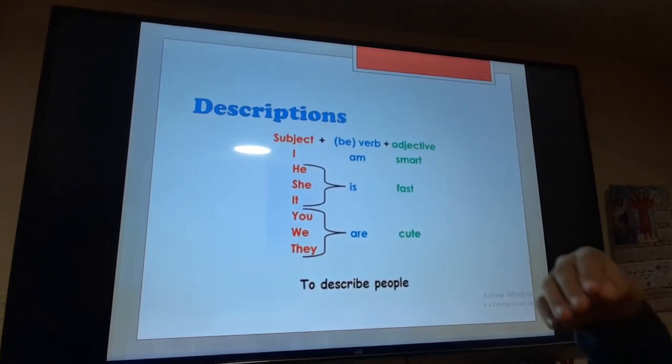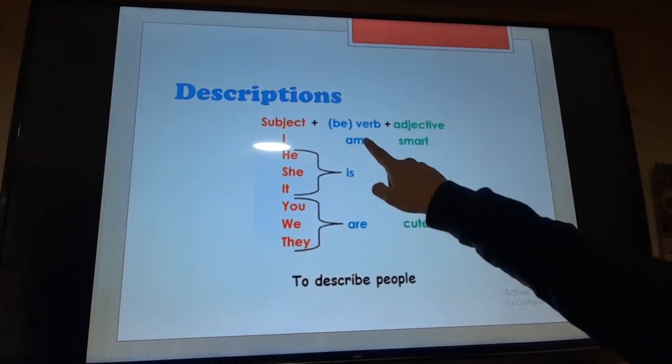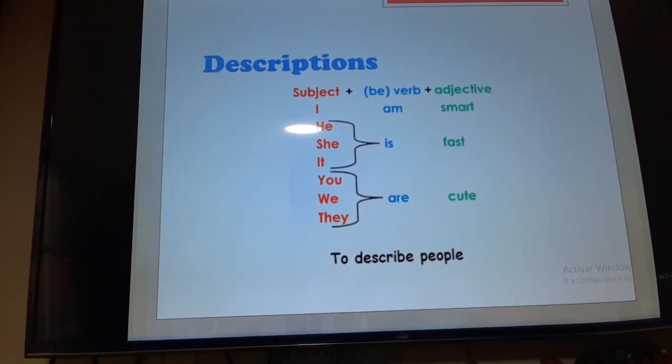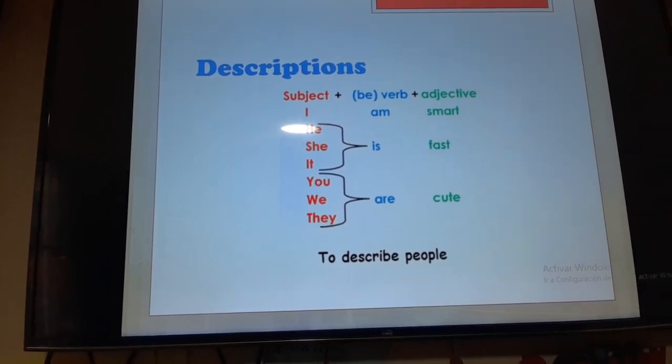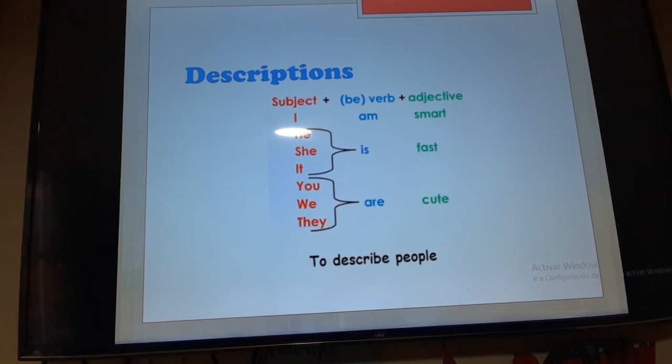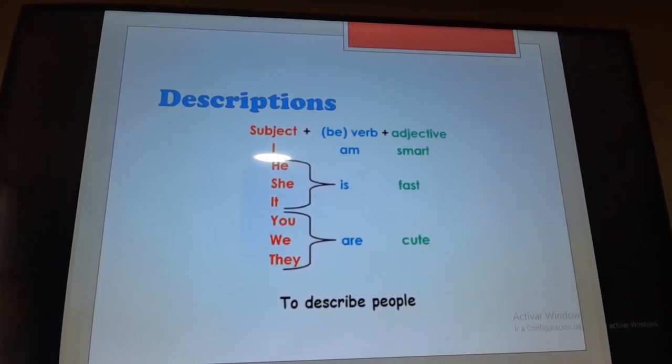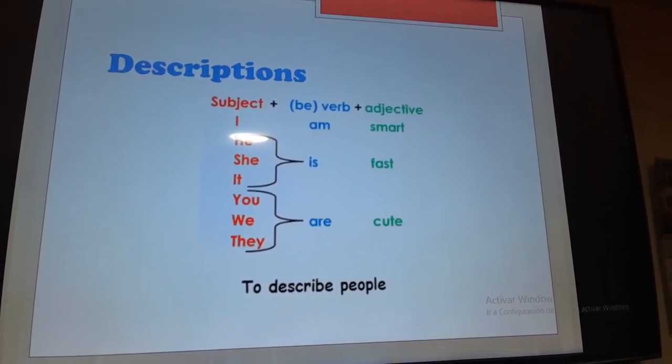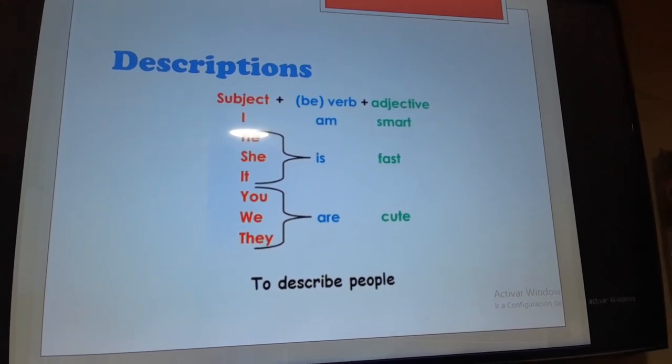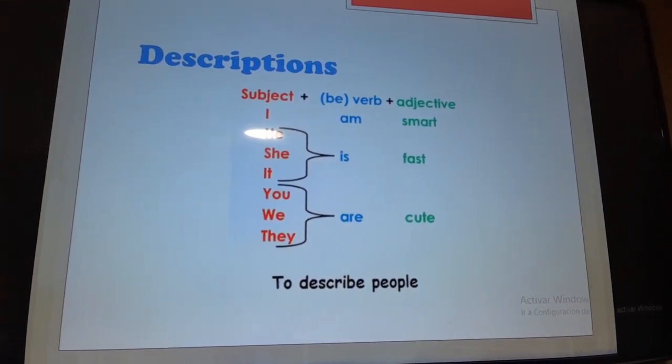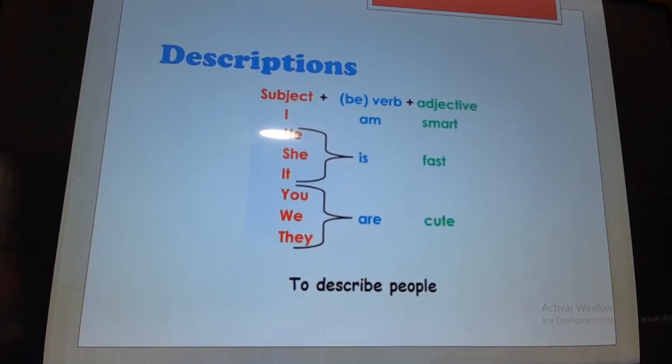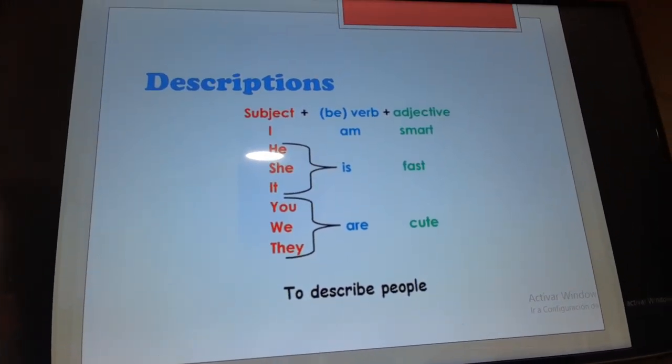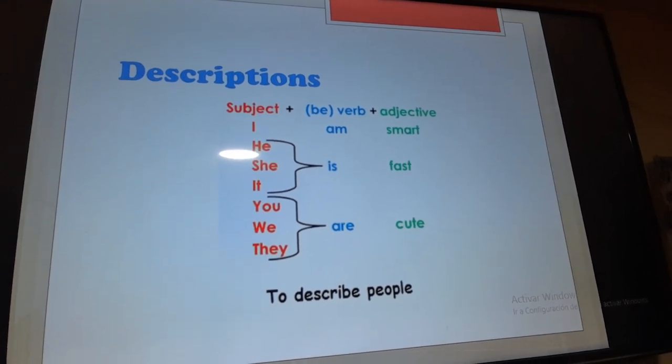First, we have to speak about descriptions. On the first place, we have the verb to be. The verb to be is used to speak about the skin color, the weight, the height, and adjectives. The idea is that you have to describe people speaking about the adjectives, the characteristics of a person, the weight, if he or she is tall or small, the weight if he is fat, chubby, thin, and finally the skin color, white or brown, etc.